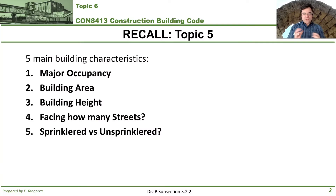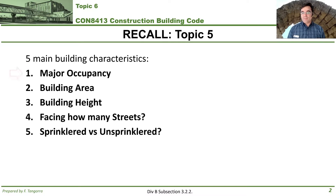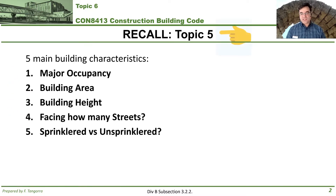Thank you for being here. I just want to remind you what we're going to be diving into with this video for topic six. It's those five building characteristics that we touched on in topic five: major occupancy, building area, building height, how many streets a building is facing, and whether that building is sprinklered or unsprinklered.